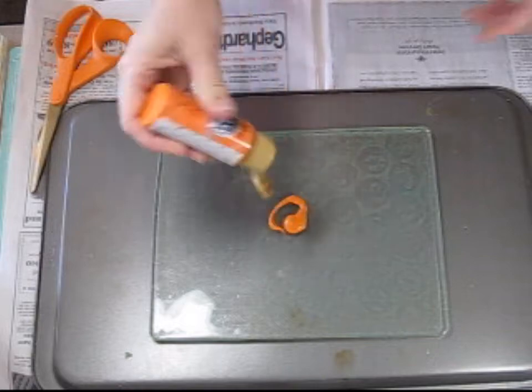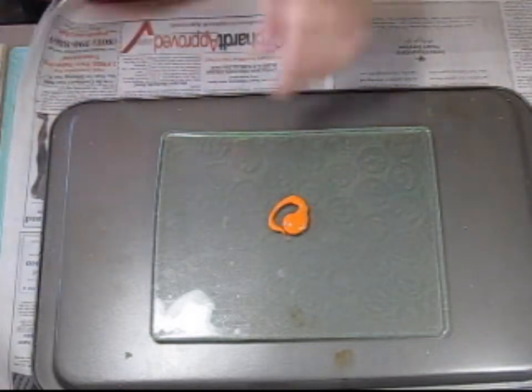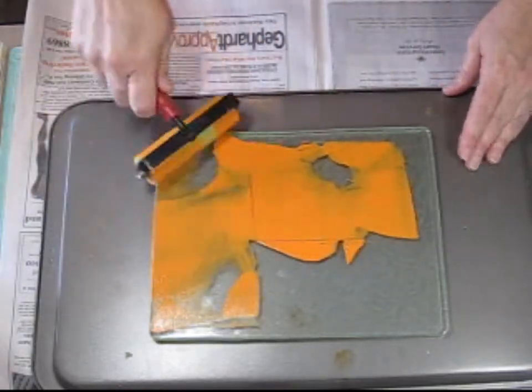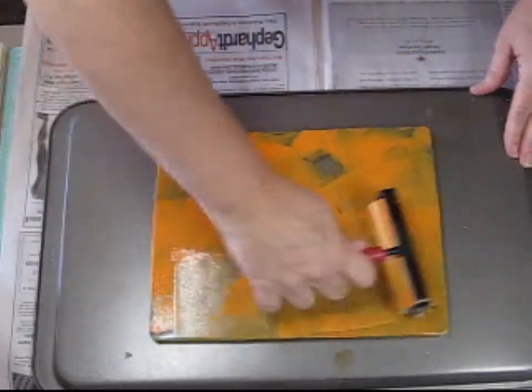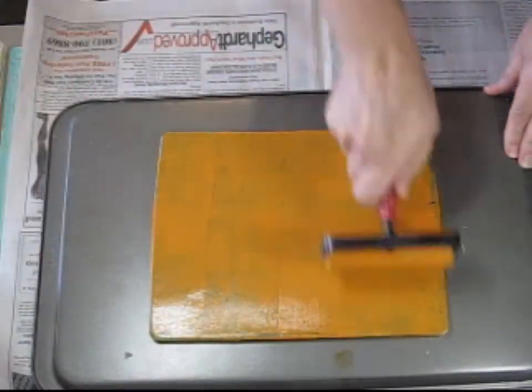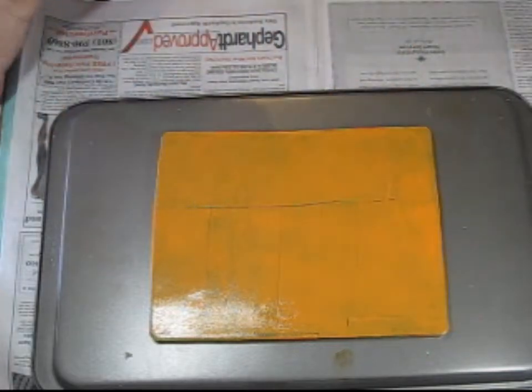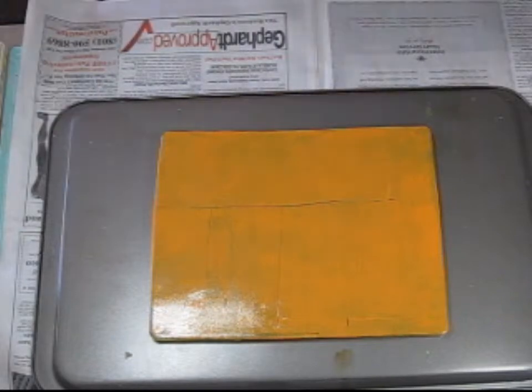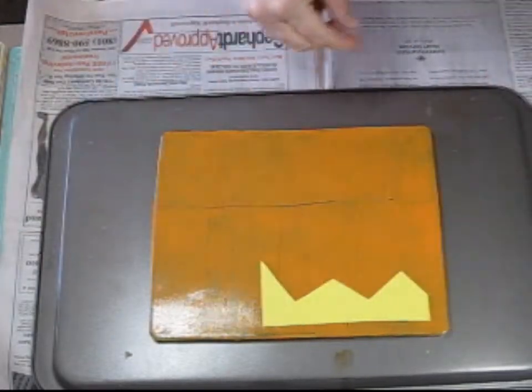So I took one of the foam squares and I cut some shapes out of it. So now my next one that I'm going to show you is with those shapes from the foam shapes. So I'm just going to brayer out some of the orange paint.